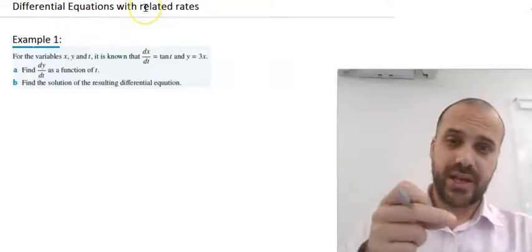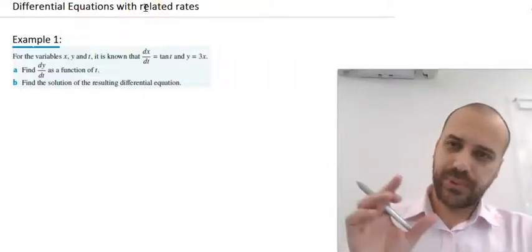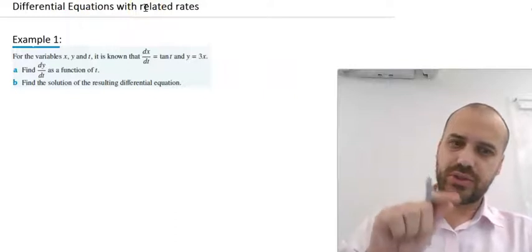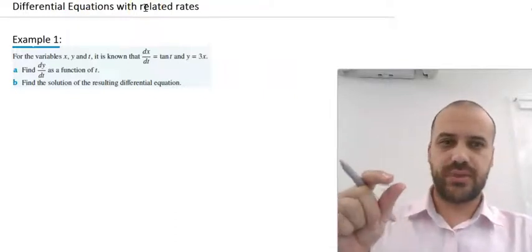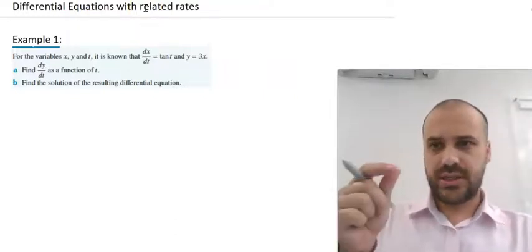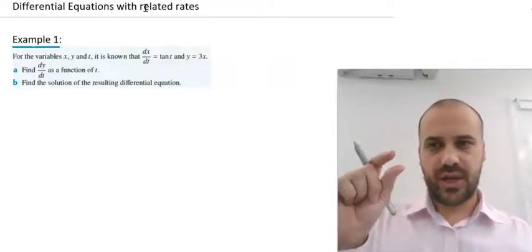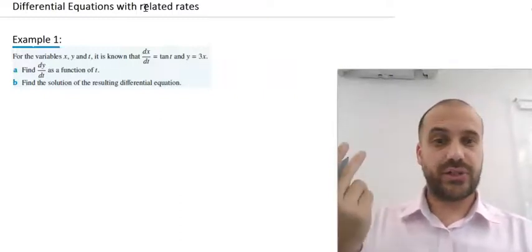In a previous video on related rates, we learned that related rates was an application of the chain rule and we could use it to find the rate at which something was changing. In this video, we're going to go one step further and once we've found that rate, we're going to solve that differential equation.